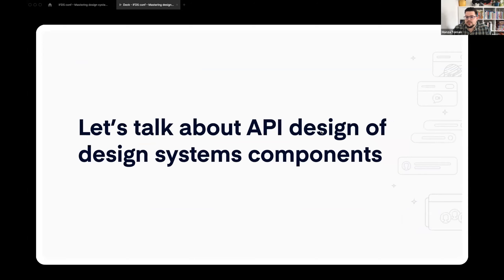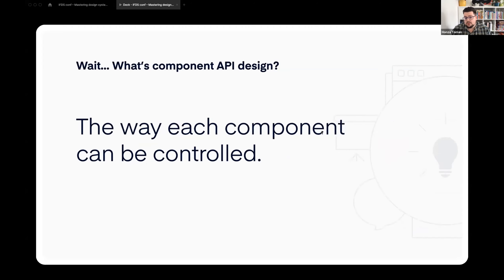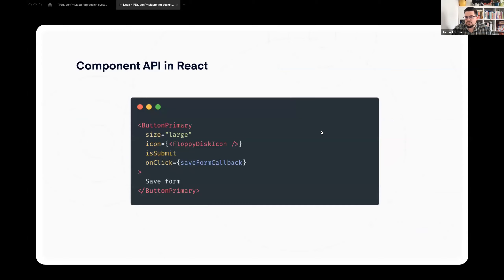Let's talk about API design. I know it's a term that is not super common in the design world — it's more common in code. But what is API design? It's the way each component can be controlled by users who are using the component. In code, it looks like something like this — a React example. We have a name, button primary, then size, different sizes, an icon, a label. There are several ways to approach this API; this is only one of them.